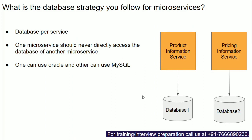Only the microservice to which the database belongs can call that database. Other microservices cannot call the database directly — they must use the REST API to retrieve data from other microservices. A major advantage of this architecture is that you can have database one as MySQL and database two as Oracle, using different types of databases for different microservices.